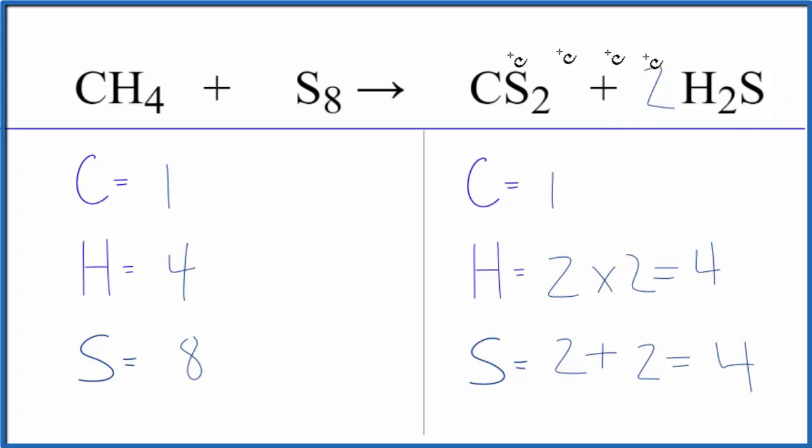What I'd like to do is just double these numbers, double the coefficient here and here, and see what that does. That should fix the sulfurs, but it might mess something else up. Let's try it though. So we'll put a two here, we've doubled that, and then we'll change this to a four. We've doubled that.